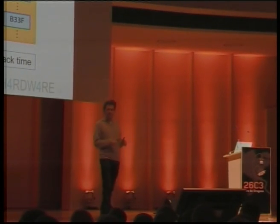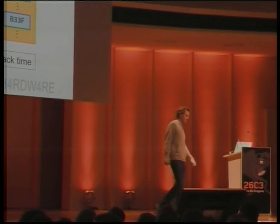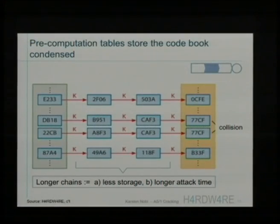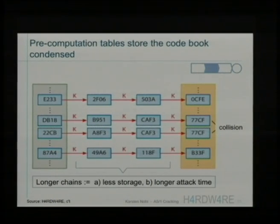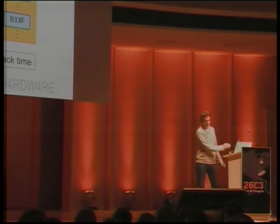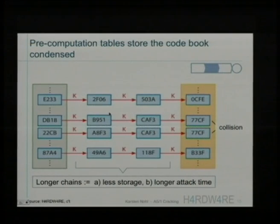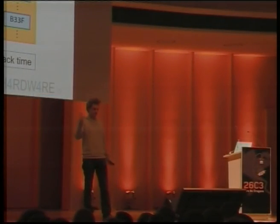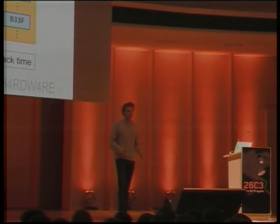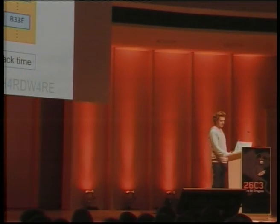Rainbow tables: starting from the idea of a codebook with just two columns — the key and the output — we want to be more efficient. The way we do it is have a codebook with more than two columns. Starting at a random value that could be a secret key, we apply the A5/1 function (marked K in this picture) to derive the value we then use as the key into the next A5/1 function, and so on. We apply A5/1 up to a million times to derive our end value, storing only the first and last value of each chain.